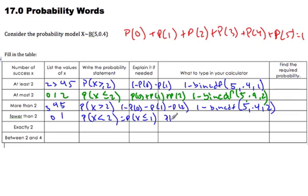The probability of 0 plus the probability of 1, which is going to be 1 minus binomial CDF, 5 comma 0.4 comma 1.